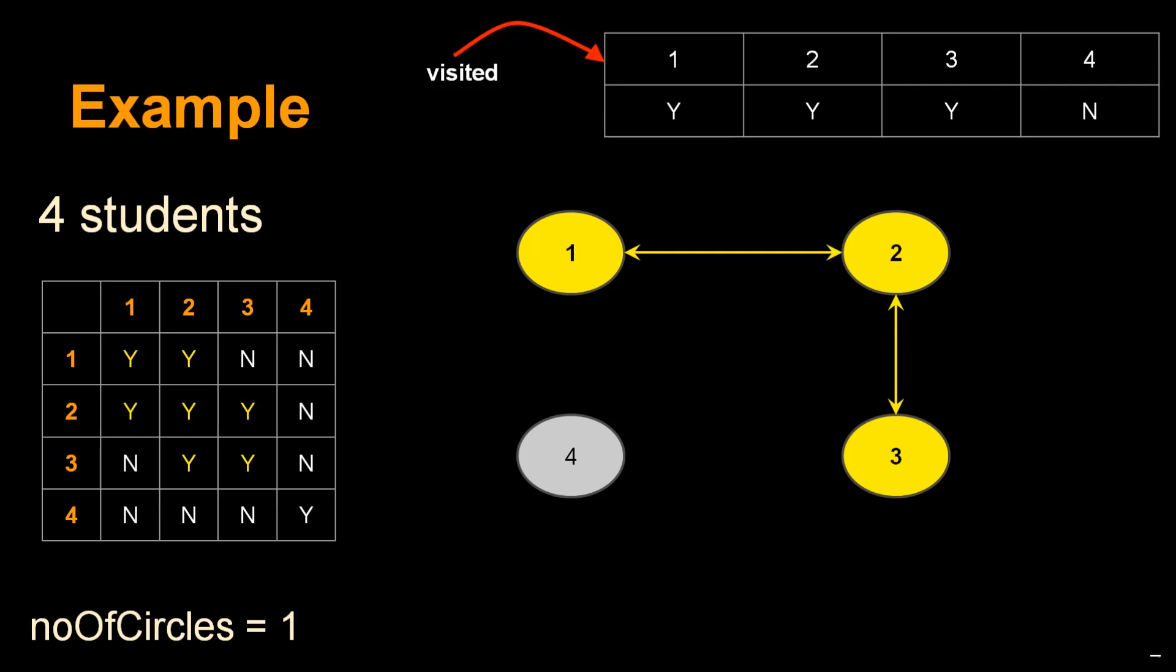The third column value is Y, meaning students 2 and 3 are friends. Since student 3 hasn't been visited yet, mark visited[3]=Y and connect nodes 2 and 3.